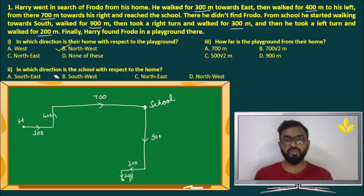Question number two, in which direction is the school with respect to the home? School with respect to the home, from here to here. We have northeast. Answer is Charlie, northeast.